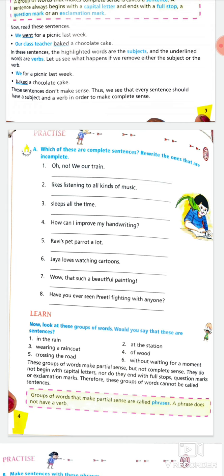Next: 'likes listening to all kinds of music' — it seems incomplete because the subject is not given. The answer will be: he likes listening to all kinds of music. You can also write 'she likes listening to all kinds of music.' Remember, you can't write 'I,' 'they,' or 'we' because the verb has an 's,' so you can't use a plural subject. You can also write a singular name like: Ram likes listening to all kinds of music.